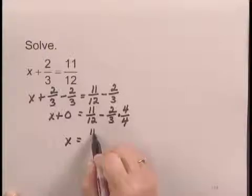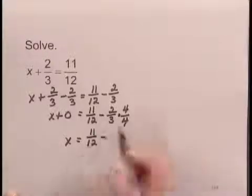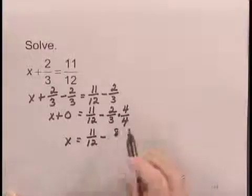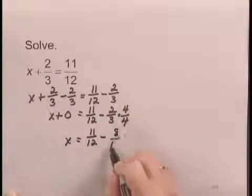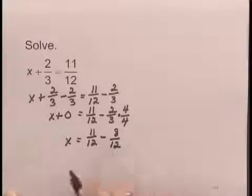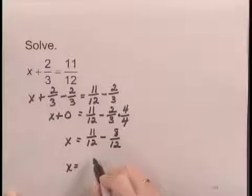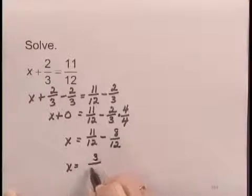On the right side, I have 11/12 minus, multiplying, I have 2 times 4 in the numerator, 3 times 4 in the denominator. And now I can subtract. I have x equals 11 minus 8 over 12, or 3 over 12.